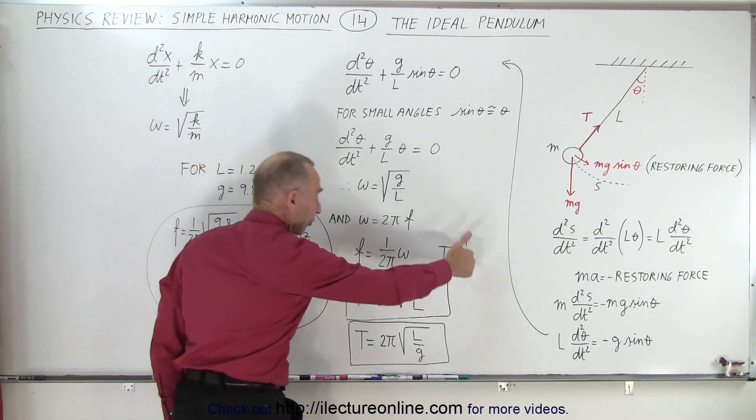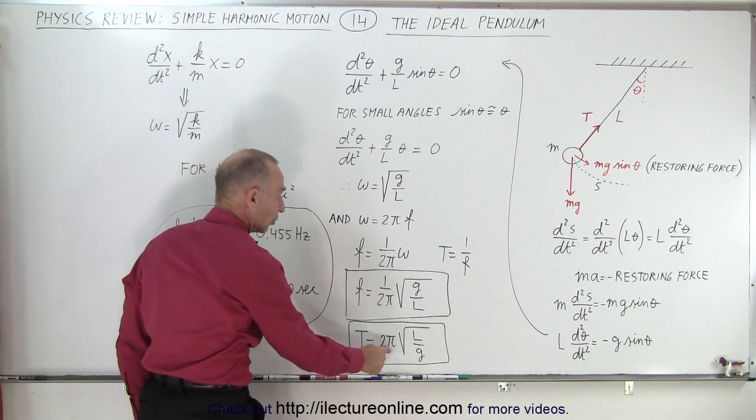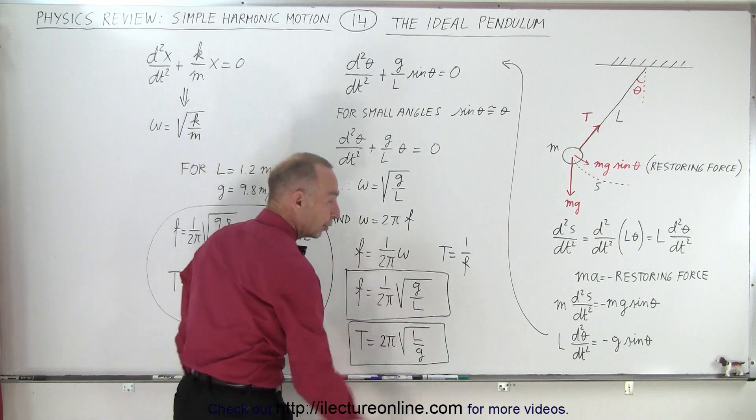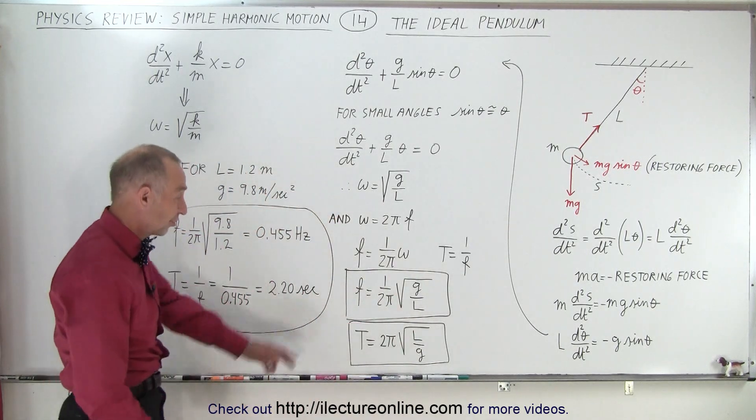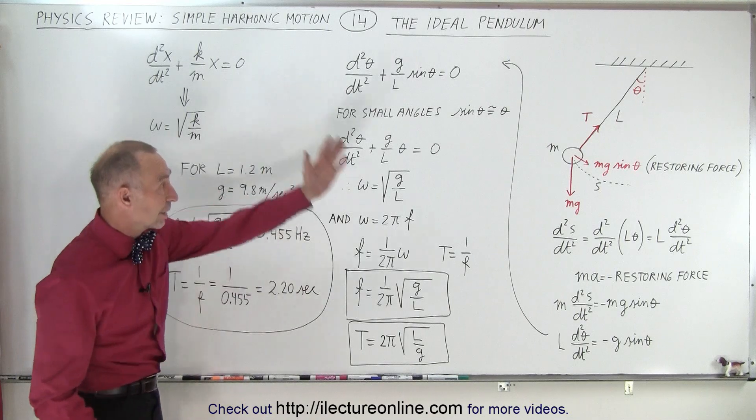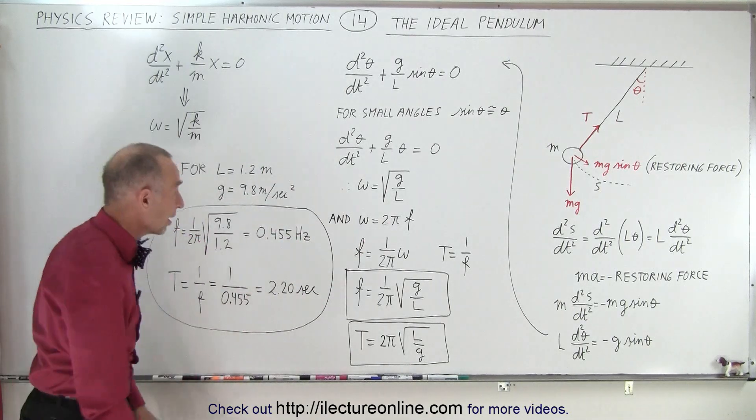And the period, which is the inverse of the frequency, is equal to 2 pi times the square root of L over g. So those are just simply the two equations you need to remember if you don't need to know how the equations were derived.